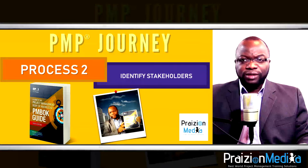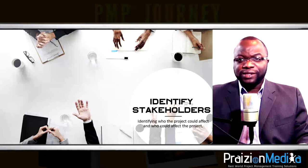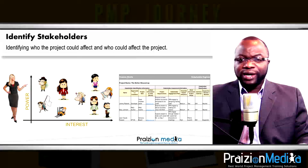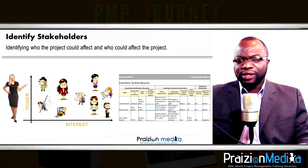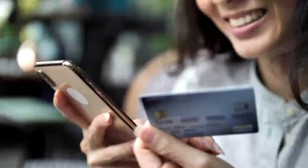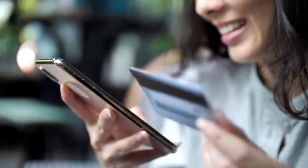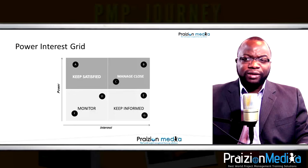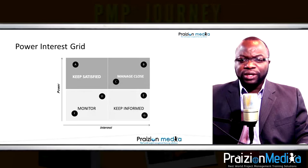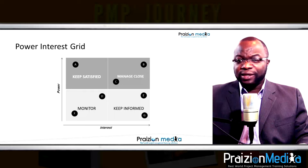Process 2: Identify stakeholders. In the identify stakeholders process, the project manager carries out a stakeholder analysis to better understand the stakeholders — their level of influence, their level of impact, those that have a high or low level of power, those with high or low interest. This is where the PM begins to identify these stakeholders and their needs.